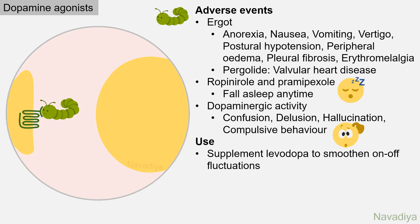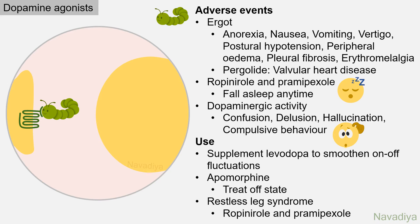Dopamine agonists are used to supplement levodopa to smoothen the on-off phenomenon. Apomorphine is used to treat the off-state. Ropinirole and pramipexole are also used in restless leg syndrome.